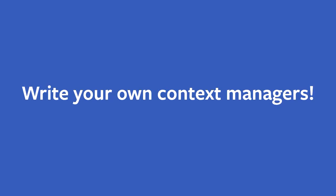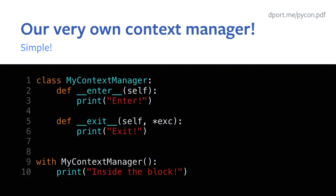Now let's look at how to write your own context managers. What does a context manager look like under the hood? Formally, a context manager is any class with a dunder enter and a dunder exit method — you have to define both. From now on I'll just call them enter and exit methods. Your init method is optional, just like with any other class. When you enter the block, enter will be called, and when you exit the block, exit will be called.